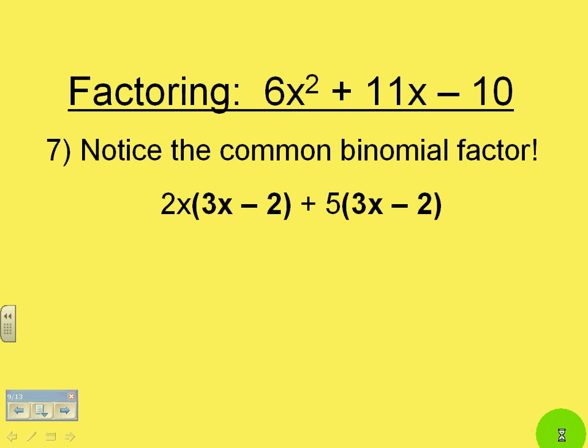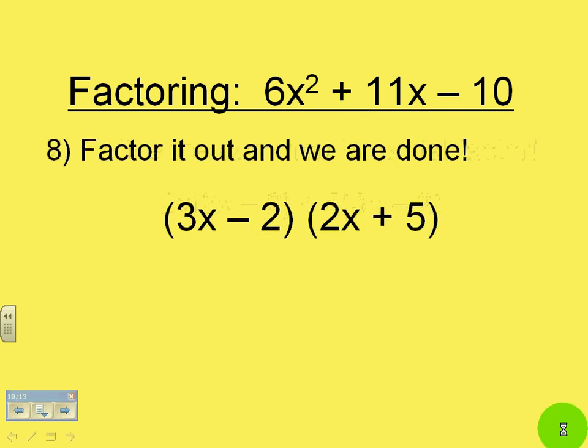Notice now we have a common binomial factor of 3x minus 2 here and 3x minus 2 there. So we factor out the 3x minus 2. We find that we have left a 2x plus 5. That gives us the factors that we need and we're all set.